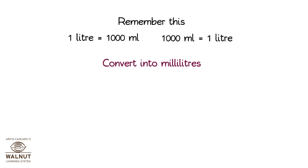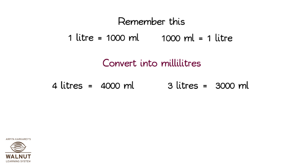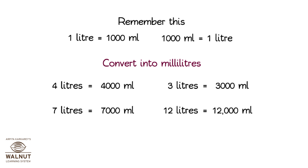Convert into millilitres: 4 litres is equal to 4000 millilitres. 3 litres is equal to 3000 millilitres. 7 litres is equal to 7000 millilitres. 12 litres is equal to 12,000 millilitres.